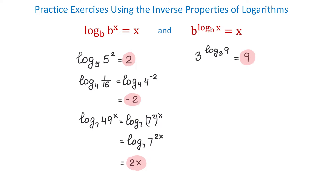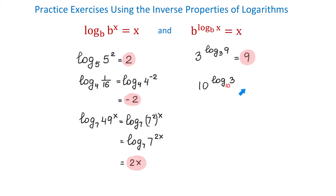In the next example, we will evaluate 10 to the common logarithm of 3. When we see a logarithm that does not show the base, we just need to know that the base is 10. Then, once these bases are the same, the result will be equal to 3.